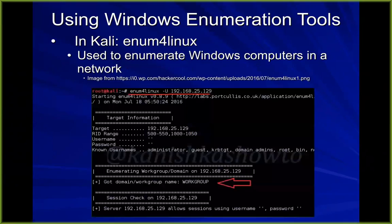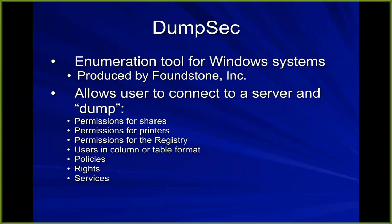In Enum4Linux, it will show you that a machine is on a workgroup, its IP address, and what folders it's sharing. DumpSec is another enumeration tool — I haven't heard people using it in years, but it's out there. You get a lot of permissions information, policies, and rights. You even get information about how often passwords have to be changed and how long passwords have to be — very strange information to give out with null credentials.